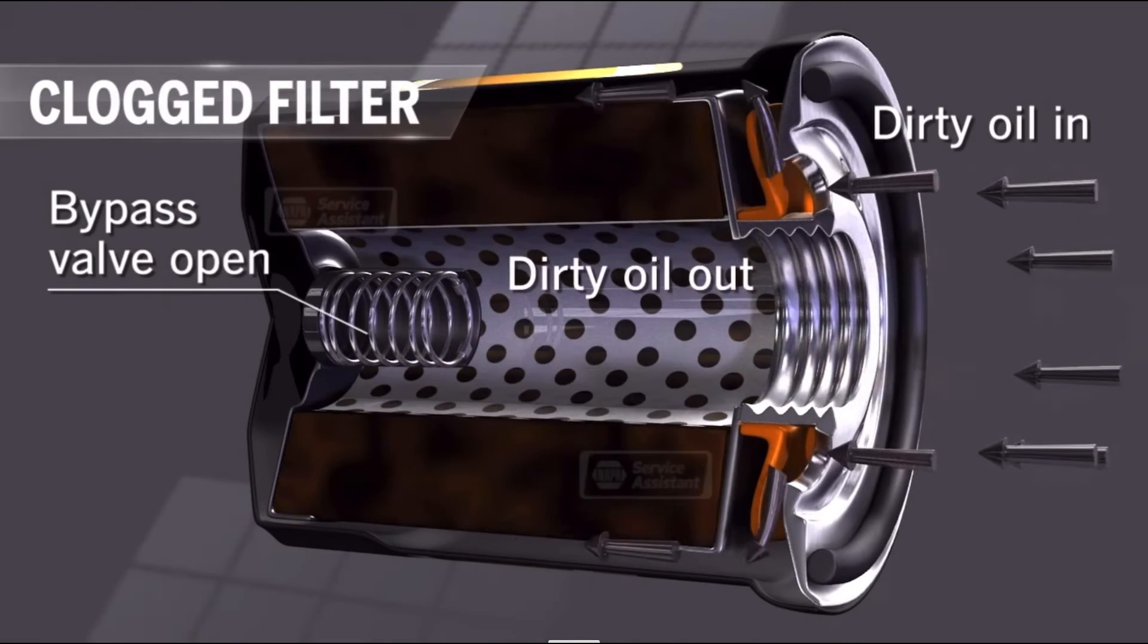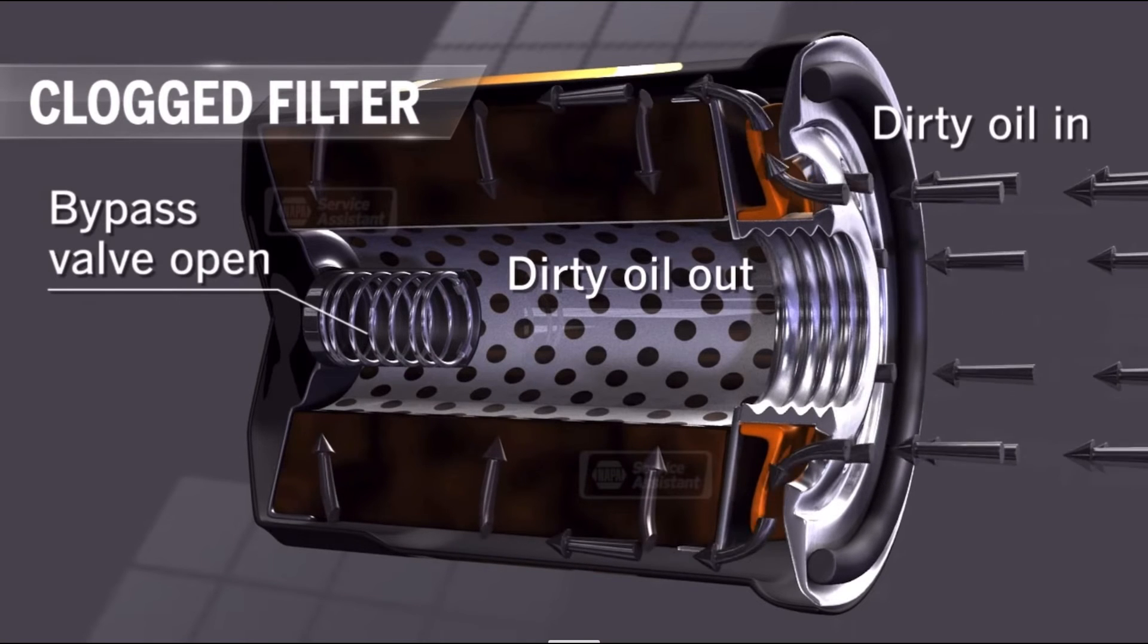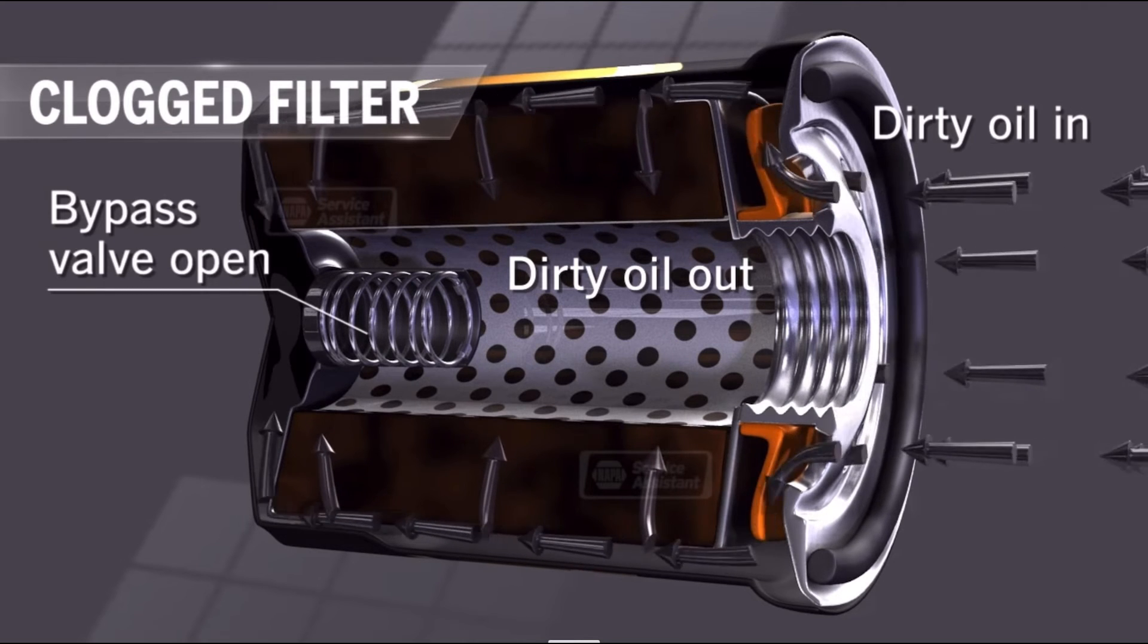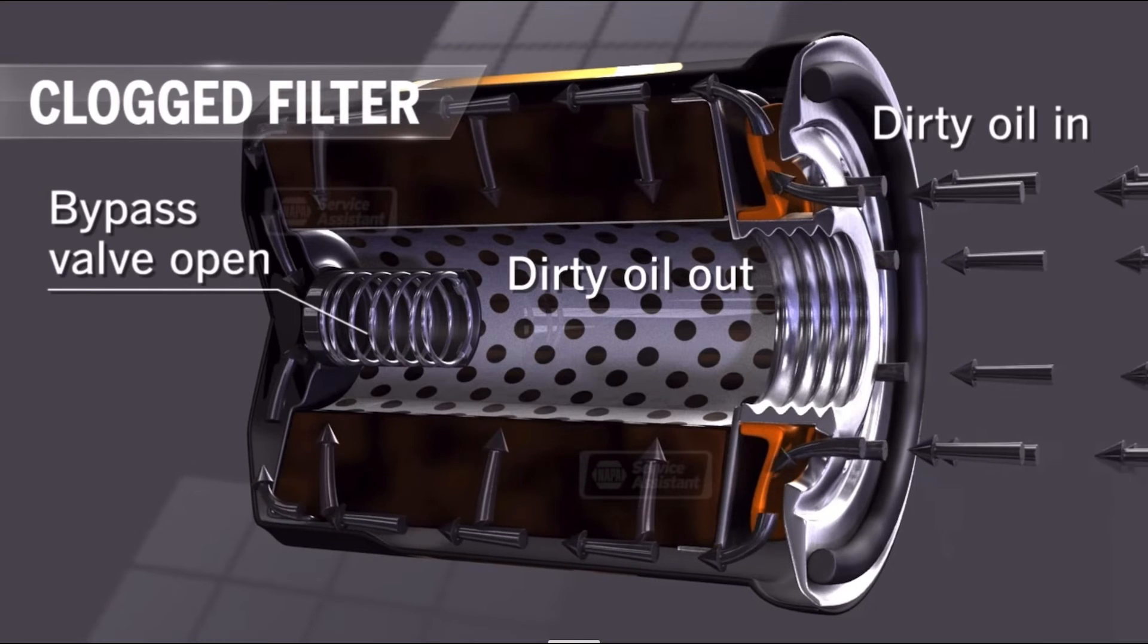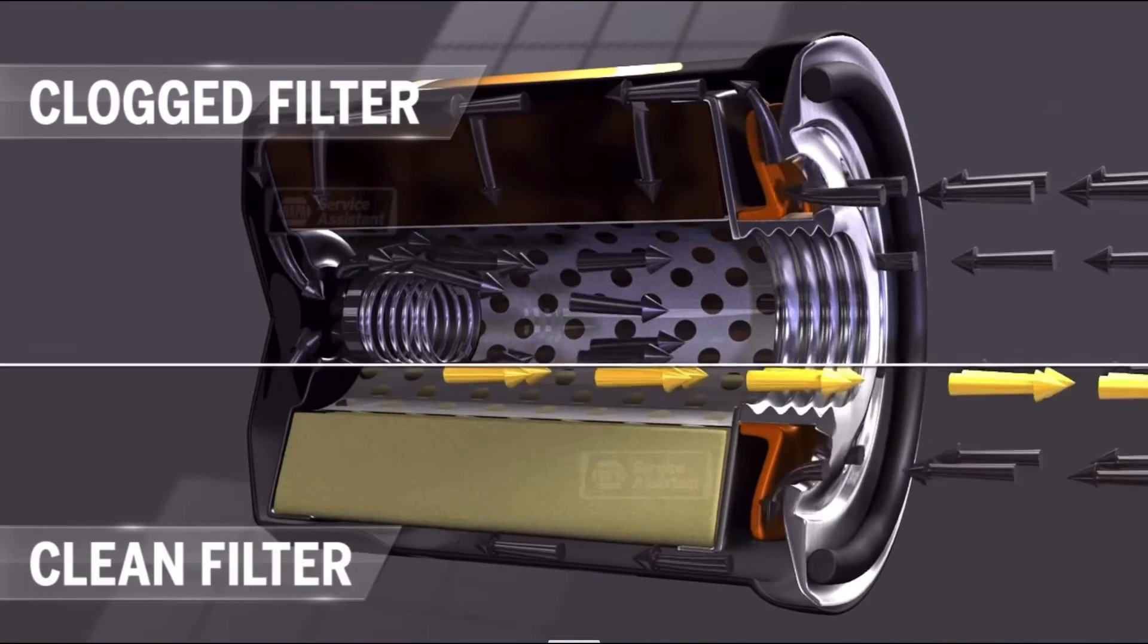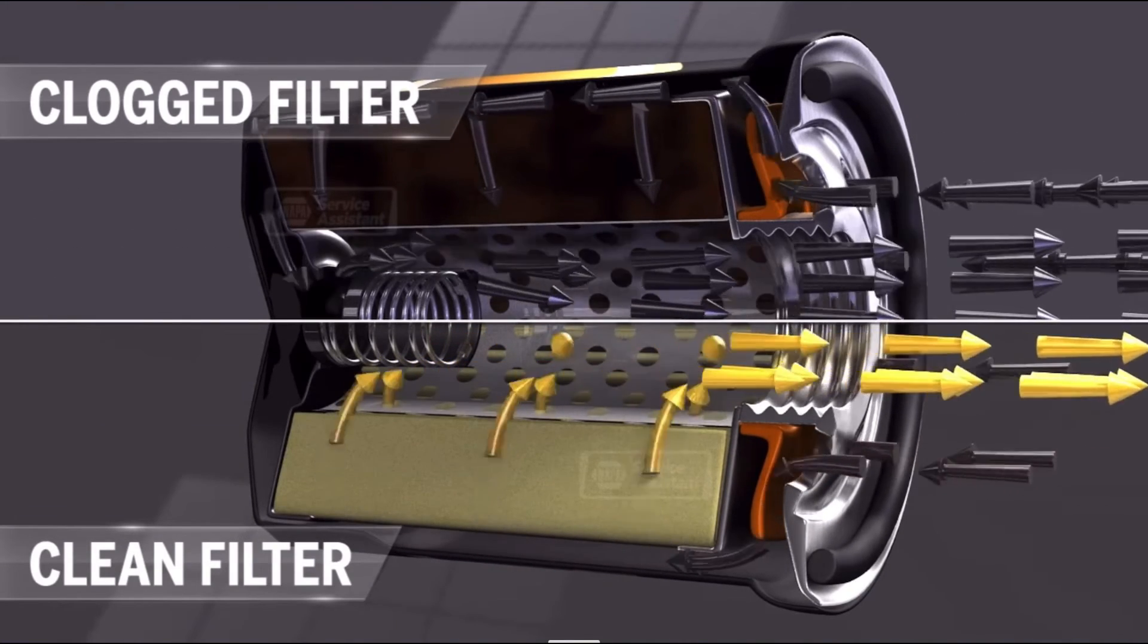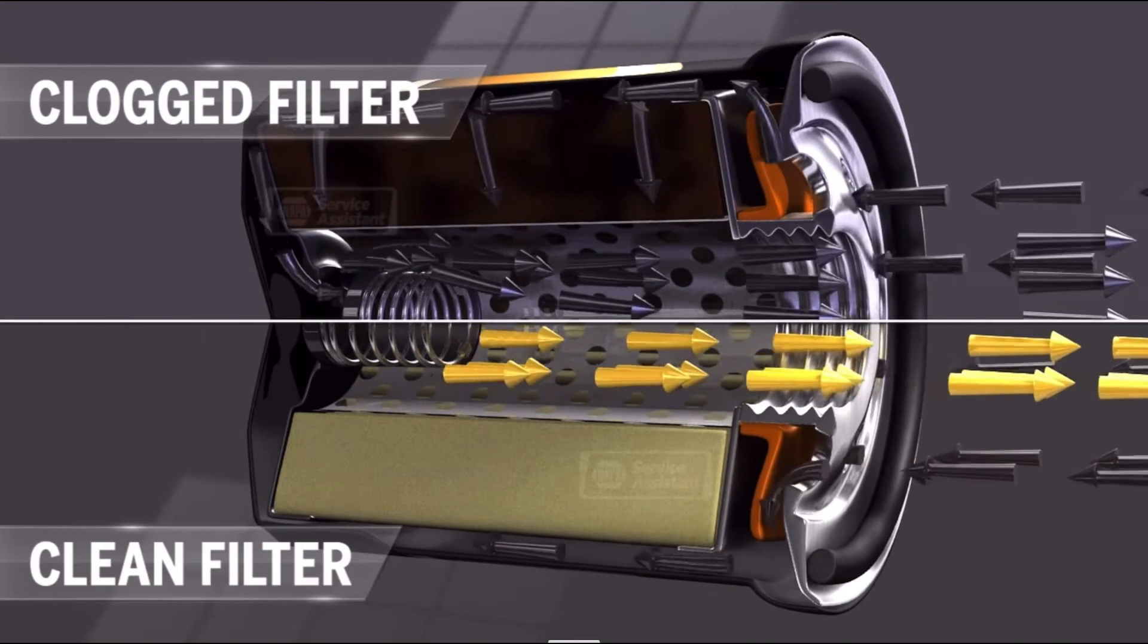when the filter media becomes clogged, the dirty oil is still flowing into the filter, but now there's a high pressure which forces the spring of the bypass valve to compress and it allows that dirty oil to flow through the filter and then off to the engine, even though it's simply just dirty oil.